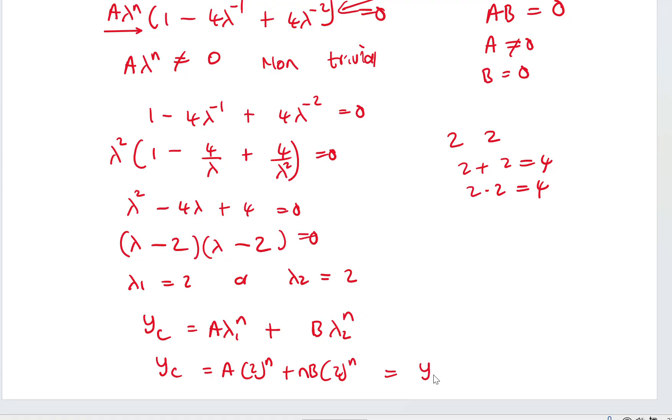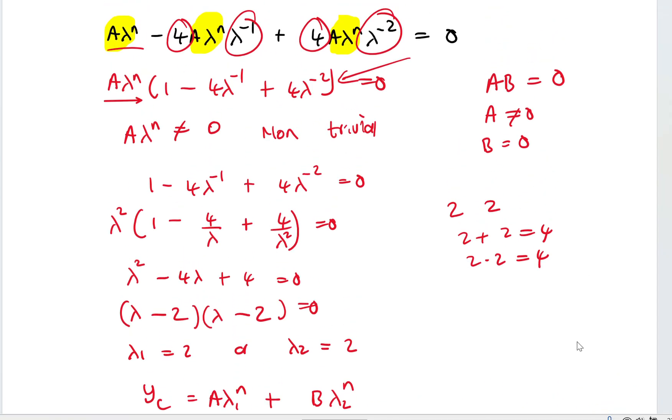I will take my independent variable n and multiply it to the second term. Therefore, I now have Y complementary is equal to A multiplied by 2^n plus B multiplied by n, then multiplied by 2^n. Now my two terms are distinct. So this is how you can solve difference equations where there are repeated roots. You simply multiply the other term by n.